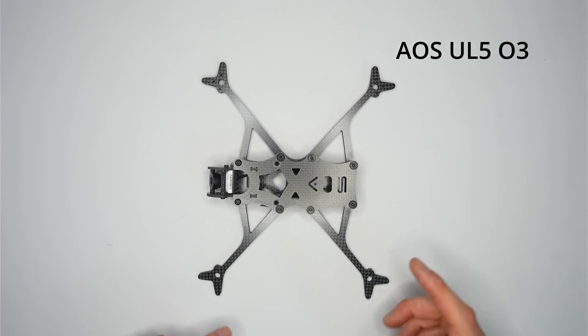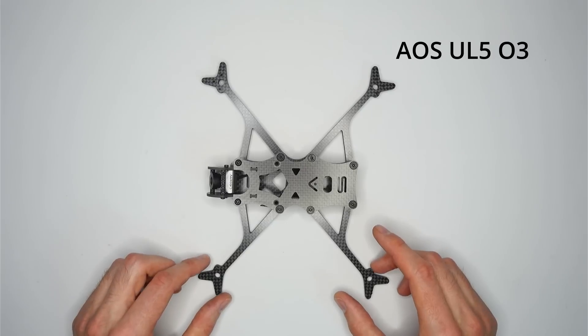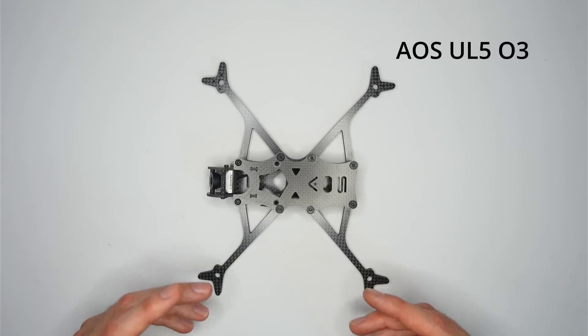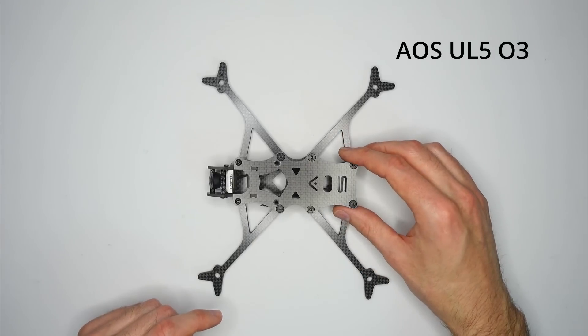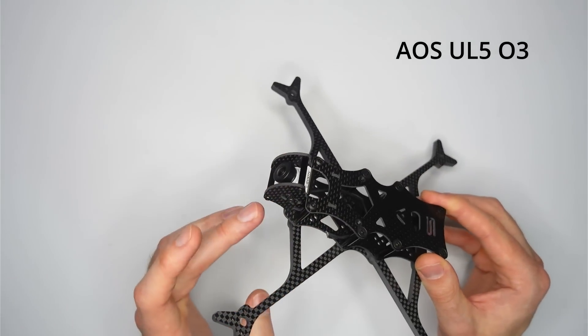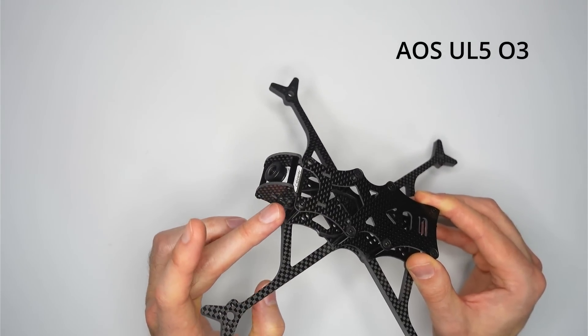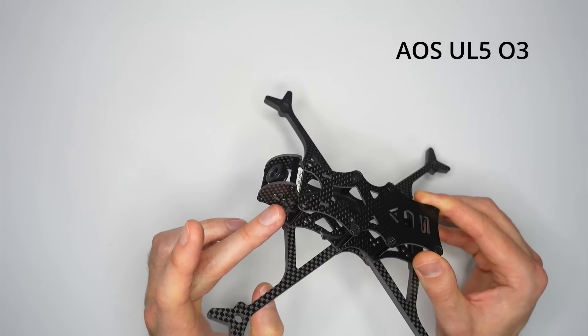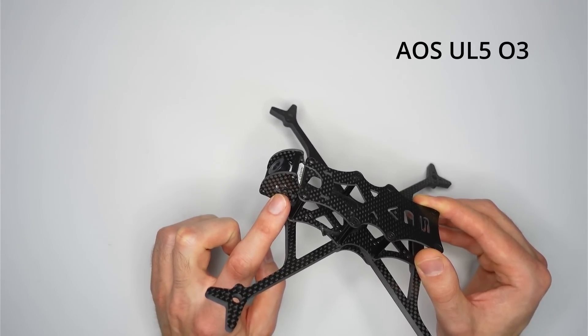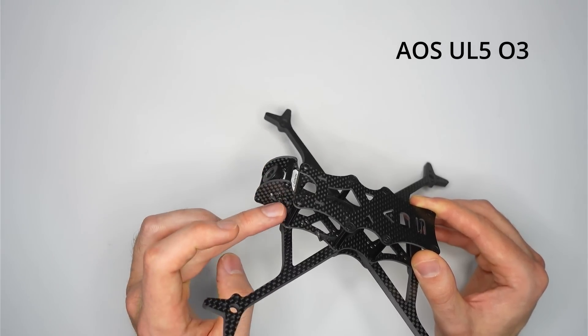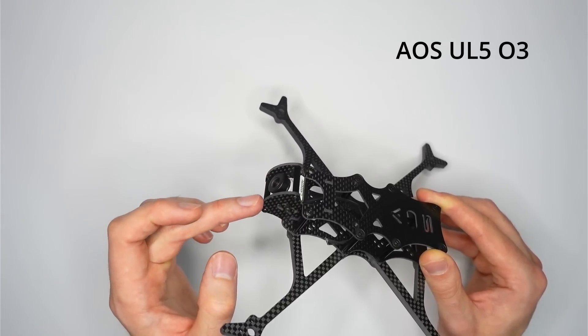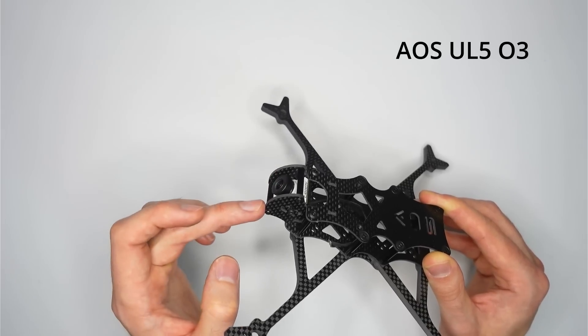The next frame I want to show you is the AOS UL5.03. And this is a toothpick 5-inch frame, so it's designed for 5-inch bi-blade props and 2004-2104 motors. And this frame has the Caddx Nebula Pro mounted into it. And this is a good camera to demonstrate how the frame works with most of the standard micro cameras that you can buy today. You're going to be using the middle S-shaped slot of the front camera plate, and you have a lot of freedom to move it up and forwards or down and back, so that you can get the camera perfectly positioned, so that you don't have the camera plates in view, but you get plenty of protection from those front two camera plates.